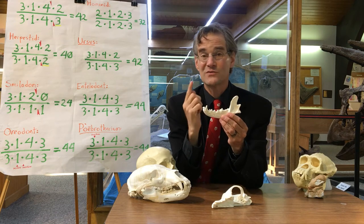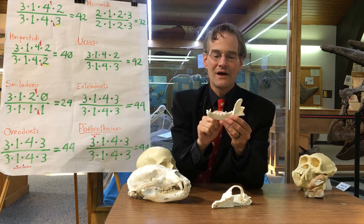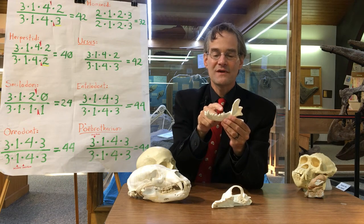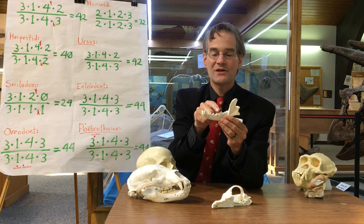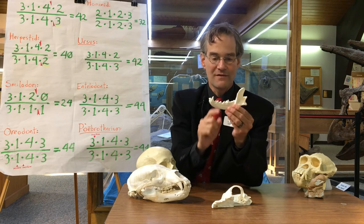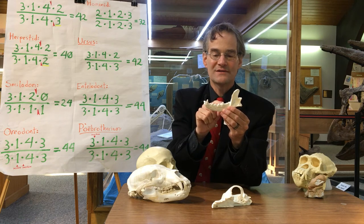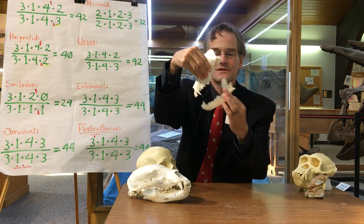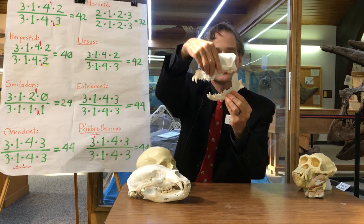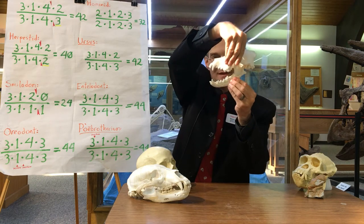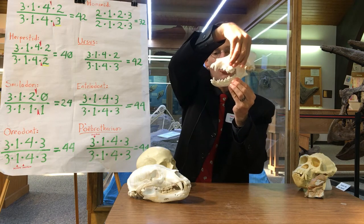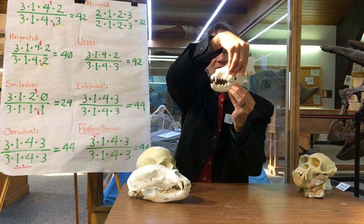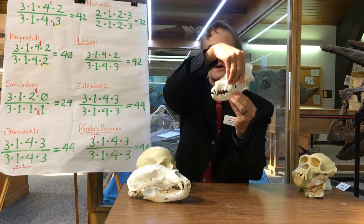One more thing I'll mention about dogs, as long as we've got one in hand, is the carnassial blades — we mentioned this before when talking about Hyaenodon. On a carnivorous mammal, one of the teeth is elongated into a sharp-edged shearing blade. In the lower jaw it's the first molar, and in the upper jaw it's the last premolar. So you can see these two are long, shearing, sharp-edged blades, and when the dog opens and closes its mouth those blades shear past each other for cutting meat. That's characteristic of mammals in the order Carnivora.